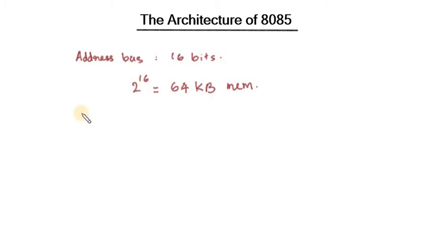Then, data bus size is 8 bits. Therefore, the ALU, Arithmetic Logic Unit, can perform operation on 8 bits. ALU will be of size 8 bits. Therefore, this microprocessor is called 8-bit microprocessor.